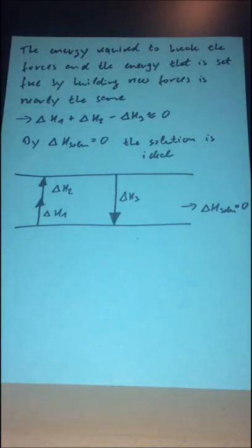So the energy required to break the forces and the energy that is set free by building new forces is nearly the same. Delta H1 plus delta H2 minus delta H3 are around zero. If delta H solution is zero, the solution is ideal. There you can see an energy diagram of an ideal solution.